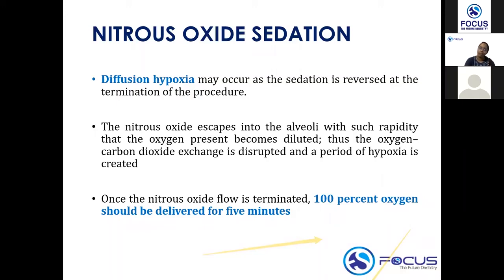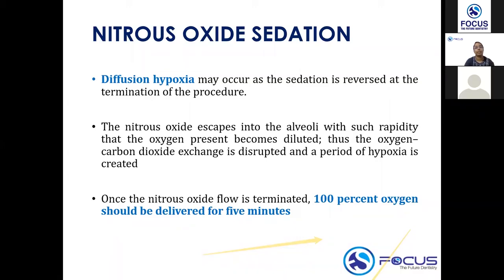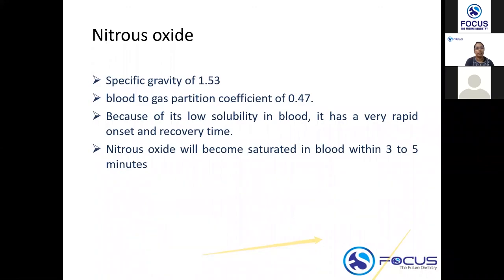To summarize: when you start sedation and when you end it, you start and end with 100 percent oxygen. You start with 100 percent oxygen for one to two minutes, and you end with 100 percent oxygen for around five minutes. Otherwise, diffusion hypoxia will occur because the nitrous oxide escaping into the alveoli at a high rate will dilute all the oxygen present, making the child hypoxic.